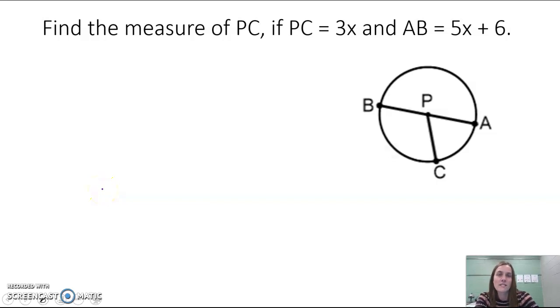Find the measure of segment PC if PC is equal to 3x and AB is equal to 5x plus 6. We are missing that segment bar up there, so I'm just going to draw on my figure that's here.